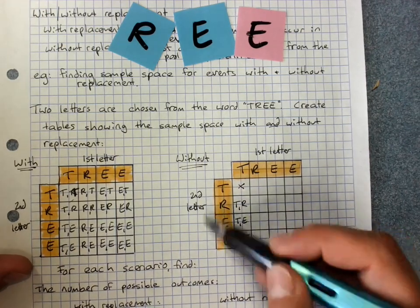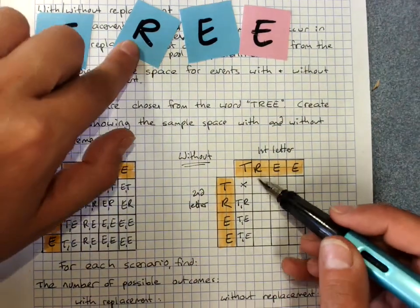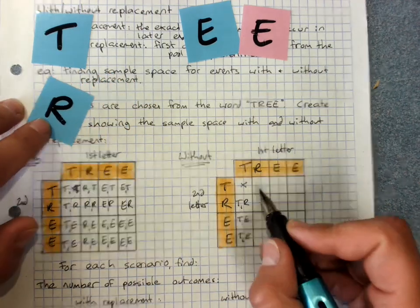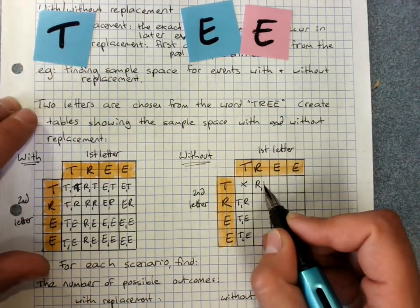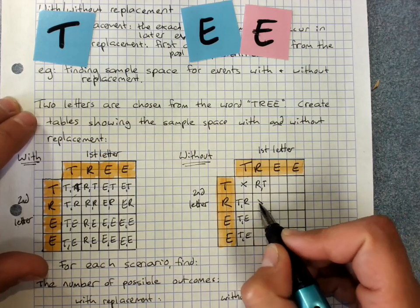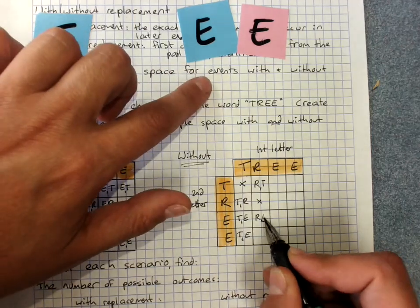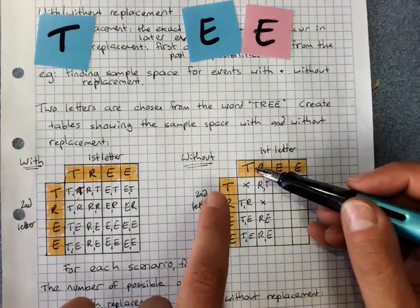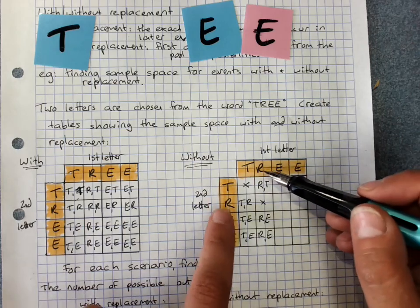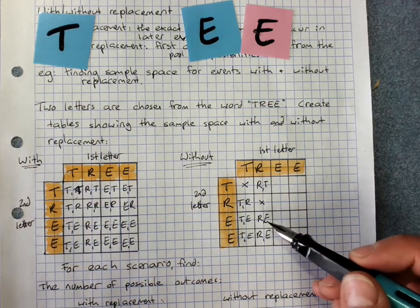But the reason I still put all the T, R, E, E in here is because what if R was my first letter? Then I could get R, T. But I couldn't get R, R. I could get R, first E, or I could get R, second E. So you'll notice how we're crossing off getting exactly the same thing twice. Because we can't, because we didn't put it back.